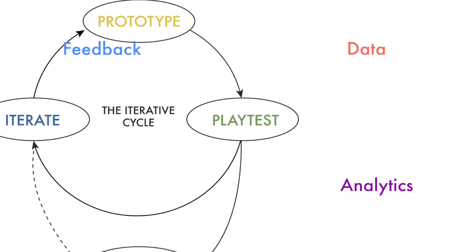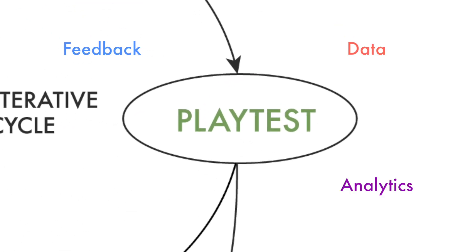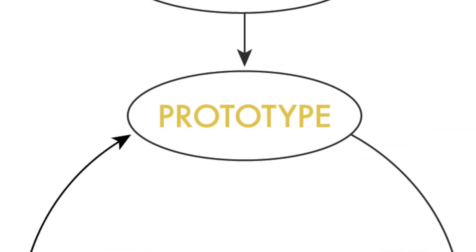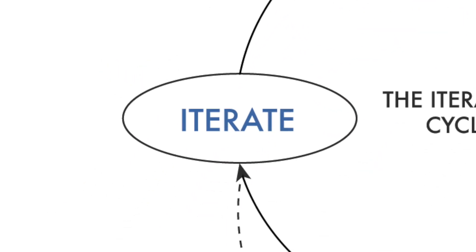You've received some feedback, data, and analytics from playtesting your prototype. Now you need to integrate some of this feedback and update your prototypes. This is the iteration stage of the design process.